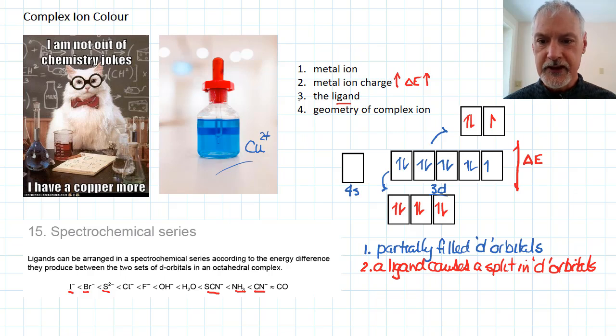As I mentioned, the ligand can have some effect, and those effects are seen down here. And finally, the geometry of the complex ion. Is it linear, square, tetrahedral, and so forth?